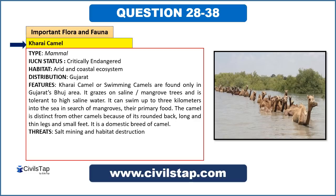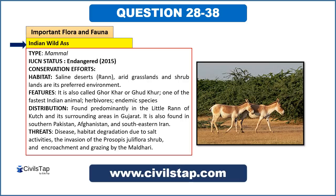The Indian wild ass was recently declared endangered — previously it was a vulnerable species. Its habitat is the saline deserts, grasslands, and shrublands of Gujarat. It is one of the fastest animals in India and is endemic to India.